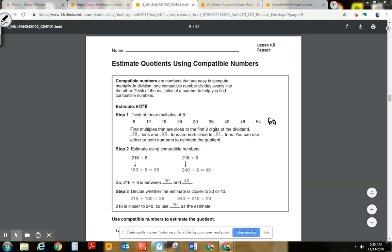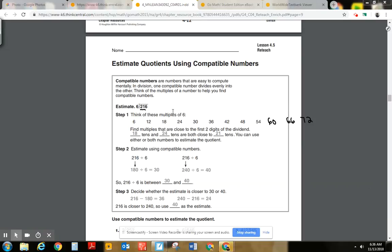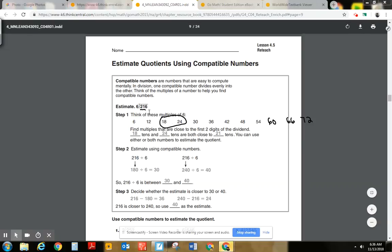So when we look here, I'm going to think of the multiples that are close to the first two digits here. Since we're estimating, we're going to see that 18 and 24 are in between that 21. So it would be 18 tens or 24 tens, pretty close to 21 tens.